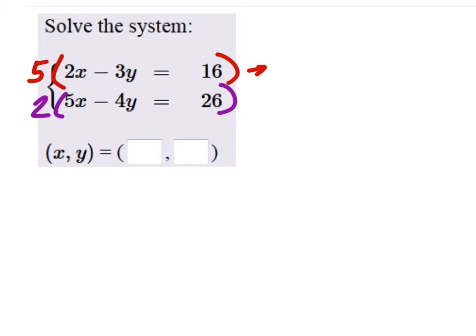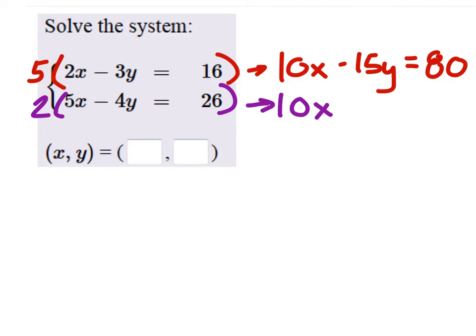So my first equation then becomes 10X minus 15Y equals 5 times 16, 80. And then 2 times 5X would be this 10X still minus 8Y equals 52.